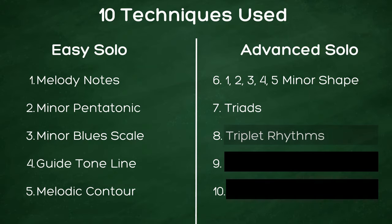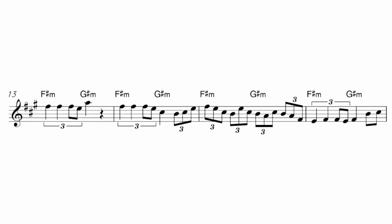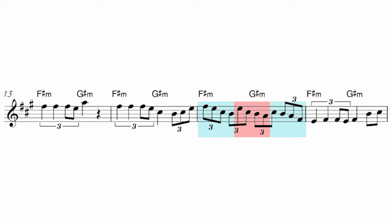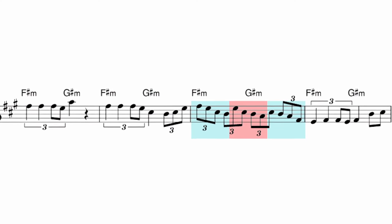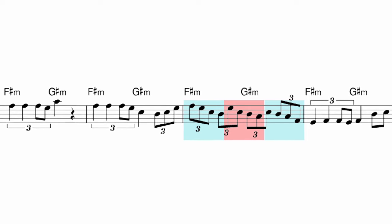Moving on to our eighth technique, this is where we're going to think rhythmically. What we're doing here is using the idea of playing with triplet rhythms — lots of triplet quarter notes and triplet eighth notes. In the third measure of this phrase I'm also doing a technique called playing triplets in sets of four, which can sound really effective.